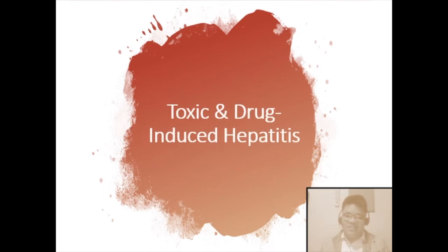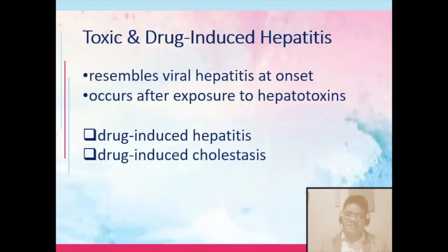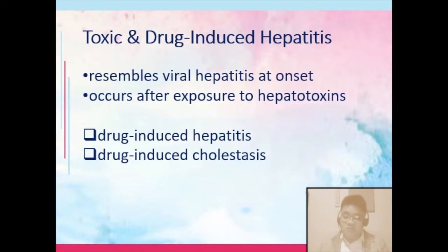Let's talk about other types of hepatitis. One example is toxic and drug-induced hepatitis. At initial stages, toxic and drug-induced hepatitis would resemble viral hepatitis at onset. The patient would have generalized flu-like symptoms.